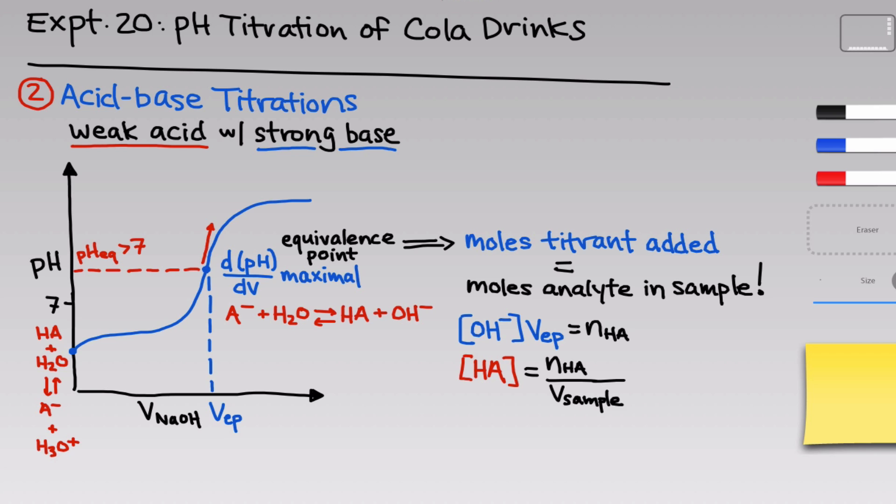This is a common point of confusion. The reason we divide by the original sample volume is because that's what we're interested in — that's the solution we're interested in. Once we've started adding the titrant, we've added volume that's not relevant to the original solution of the analyte.